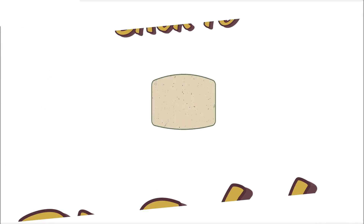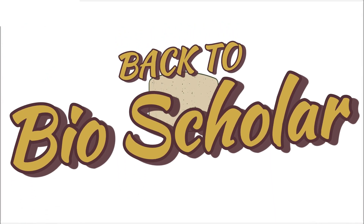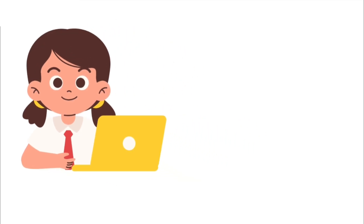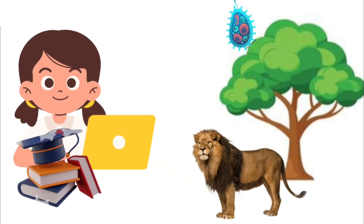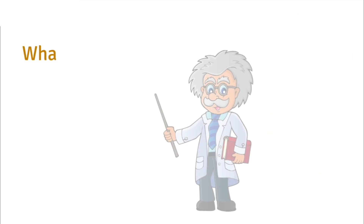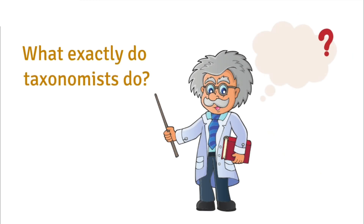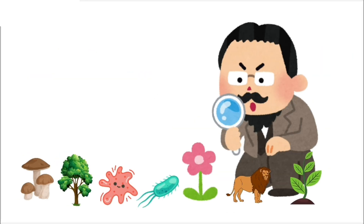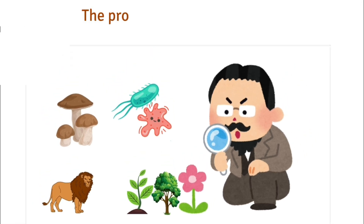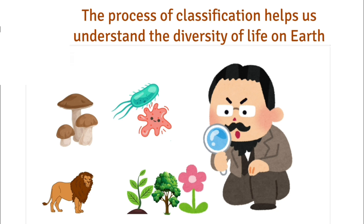Hello everyone, and welcome back to Bioscholar. We're starting an exciting new series where you'll learn how to classify organisms just like a scientist. What exactly do taxonomists do? They observe, compare, and group organisms based on shared characteristics. This process of classification helps us understand the diversity of life on Earth.